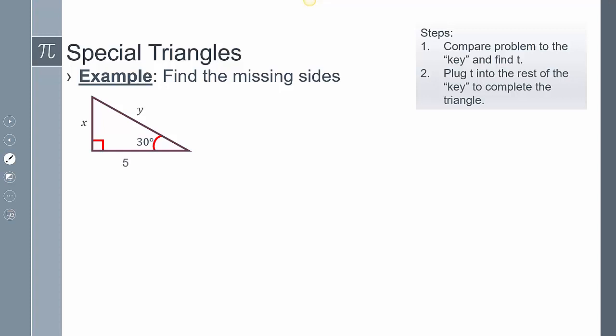Looking at this other problem here, my first step, I need to compare it to the key. This is t, t root 3, and 2t. I can say that 5 equals t root 3, x equals t, and y equals 2t. Solving for each one, divide both sides by root 3, I get t equals 5 over root 3.